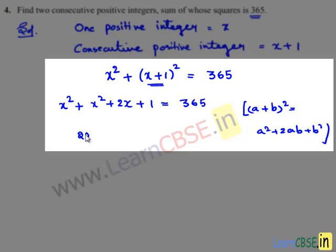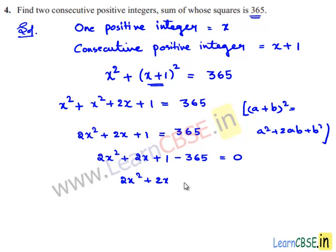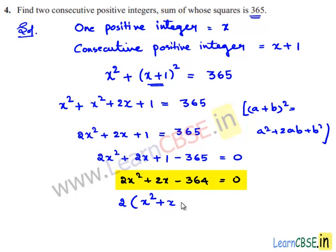x squared plus x squared is 2x squared, so 2x squared plus 2x plus 1 equals 365. Transposing 365 to the left hand side gives 2x squared plus 2x minus 364 equals 0. Taking 2 as common gives x squared plus x minus 182 equals 0.